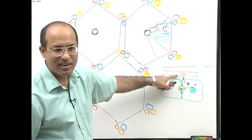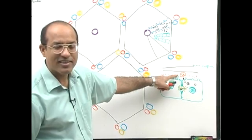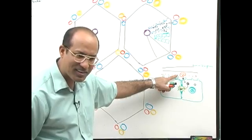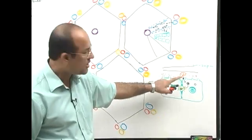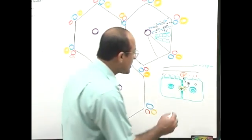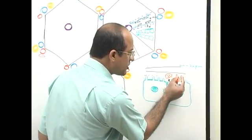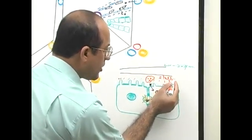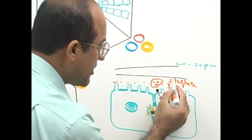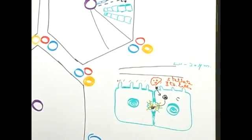Vitamin A is lipid soluble. This cell is fat-storing and vitamin A-storing. This cell is called the stellate cell, also called Ito cells.